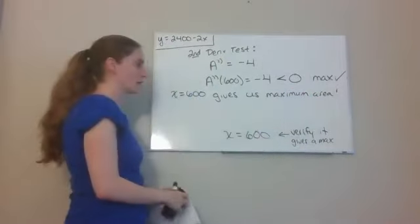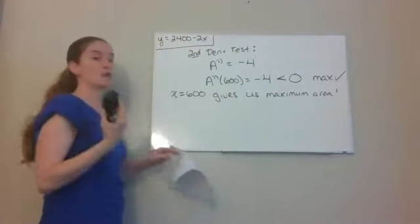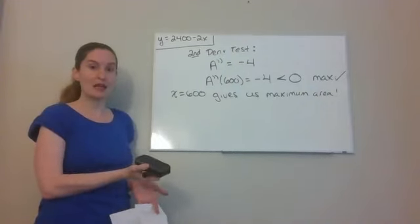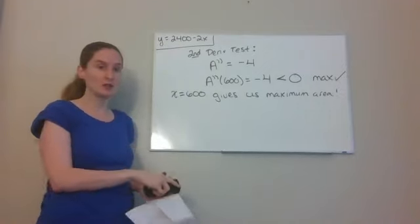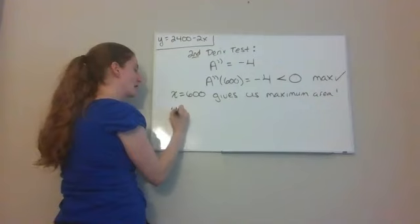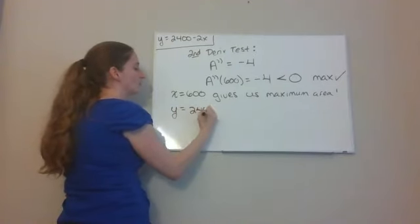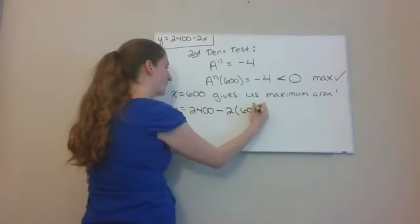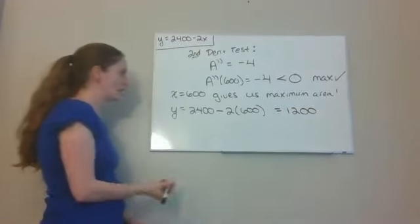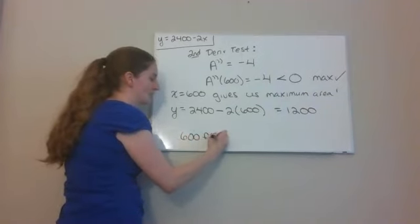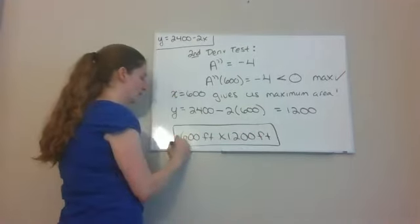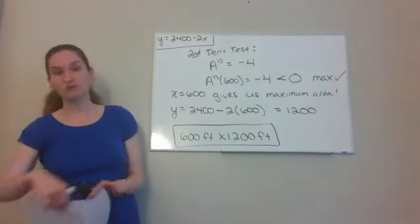We've done all the hard work. Now I just need to write my answer. They asked for the dimensions of the field that maximize the area, so I need x and y. We have x equals 600. To find y, I use y equals 2,400 minus 2 times 600, which gives 2,400 minus 1,200 equals 1,200. So the dimensions of the field are 600 feet by 1,200 feet.